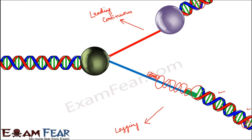Looking at the process of discontinuous synthesis in the animation, the synthesis on the lagging strand takes place in the opposite direction to the direction of growth of the replication fork. The synthesis happens in smaller fragments in that opposing direction — that is why it is called discontinuous synthesis.